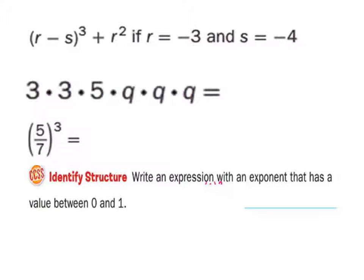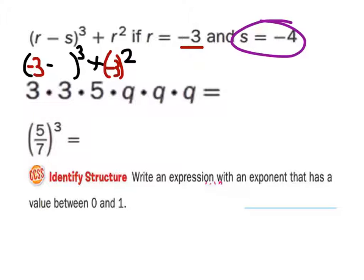Alright, so this first problem, what we're going to do is, we're going to solve it by just placing the values of R and S into this expression, all right? So notice we have R, it's minus, and then we've got to the power of three and two, okay? So the value of R is negative three. It's negative three, right? So this R as well is negative three, and S here is negative four. Negative four, okay.